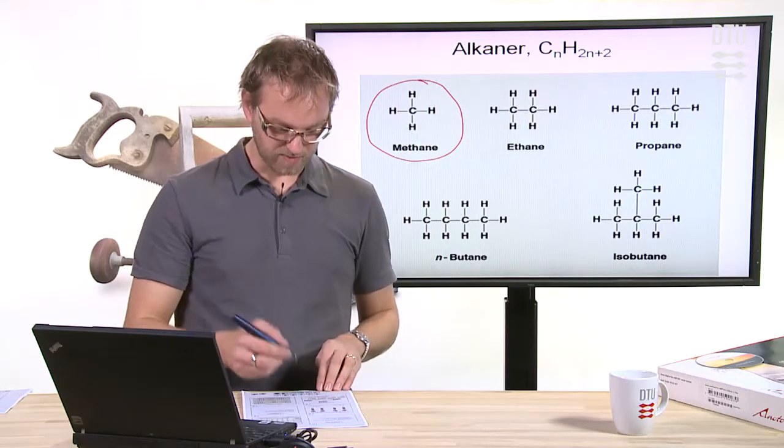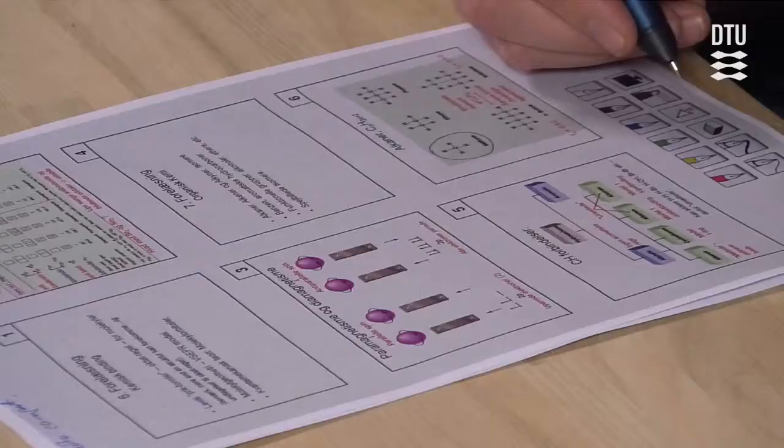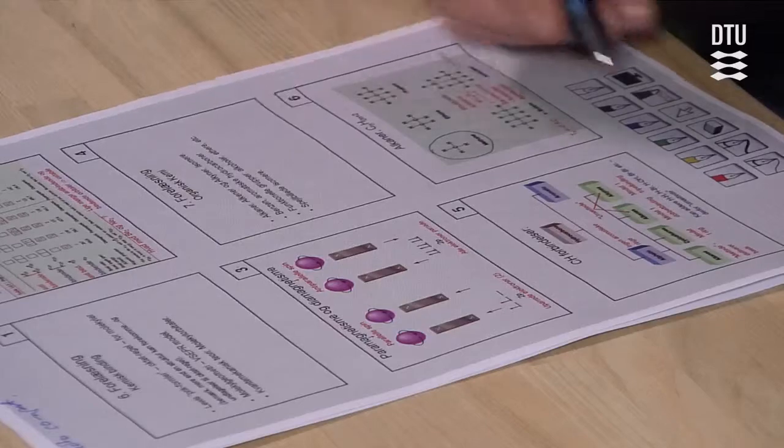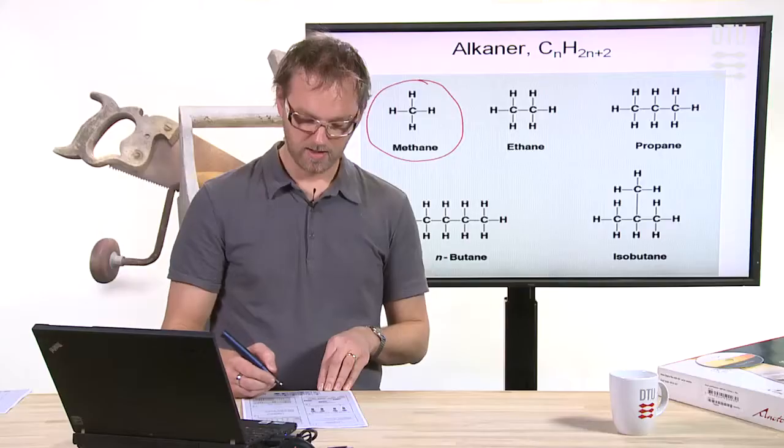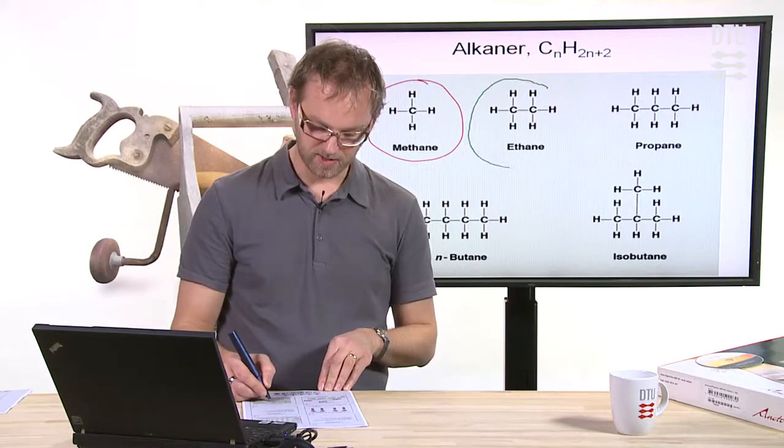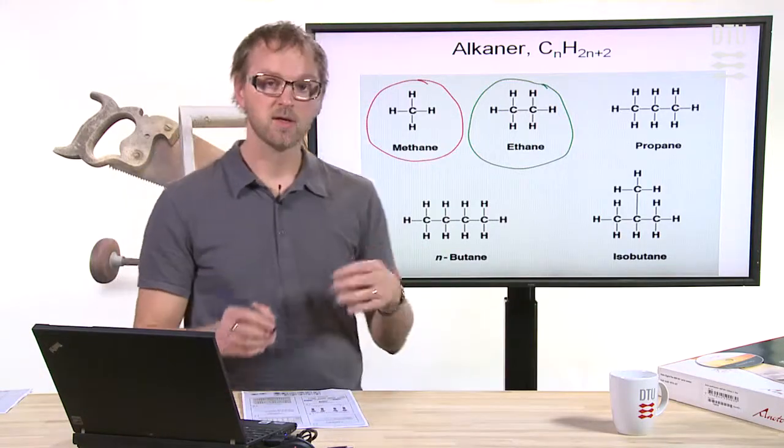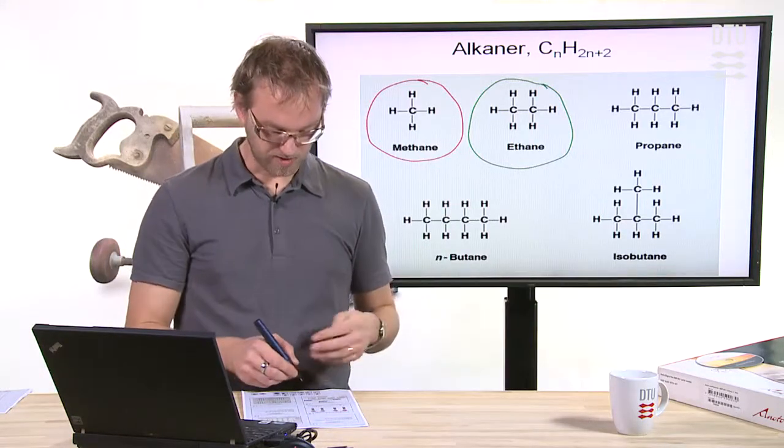So the functionality of the pen is decided by which tool you select down here. Now, I select green and I draw on ethane. So now I highlight that with a green line.